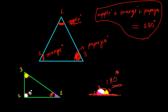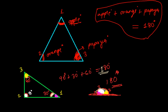For example, if one angle is 90 degrees, another is 30 degrees, then the third must be 60 degrees — because 90 + 30 + 60 = 180 degrees. The sum must be 180 degrees at any cost. For any triangle you choose, the sum of its three internal angles will always be 180 degrees.